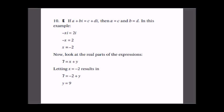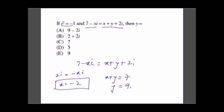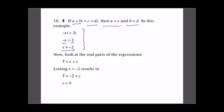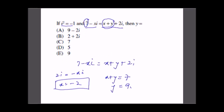If a + bi is equal to c + di, then a is equal to c and b is equal to d. We have on the left side, which is equal to x + y + 2i. This is equal to 7 - xi, which means 7 is equal to x + y and -x is equal to 2. So x is equal to -2. From the given equation, 7 - (-2) which is equal to 9, and y is equal to 9. So y is equal to 9, which means our correct answer is answer E.